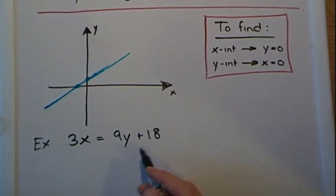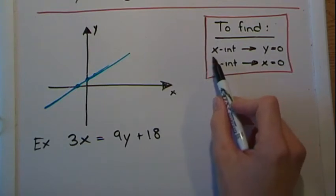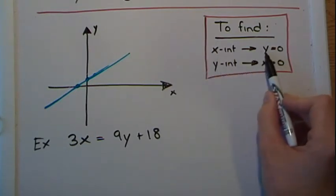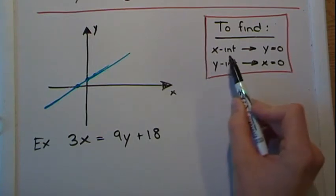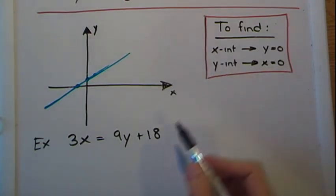So again, remember, when we're trying to find the x intercept, we replace y by zero and solve for x. So let's do that.